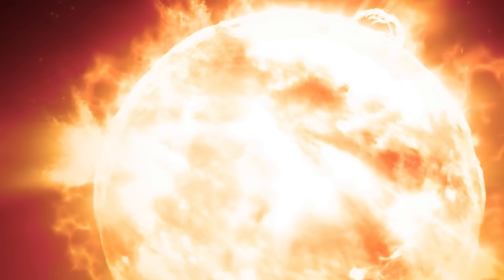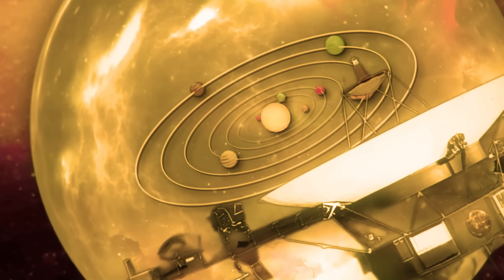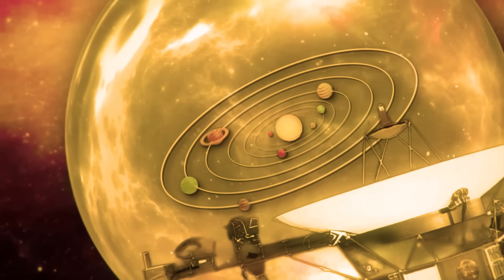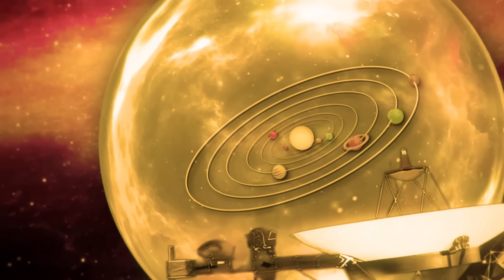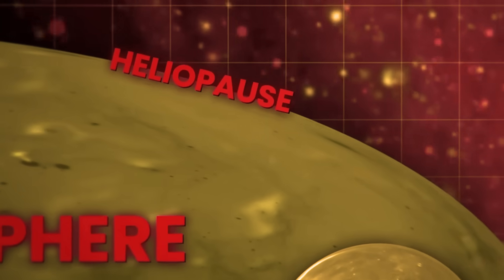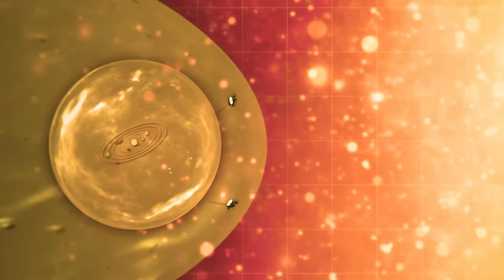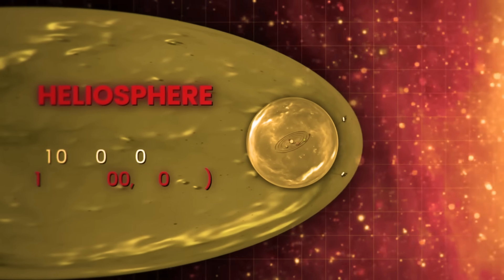Now, as Voyager 1 continues through this volatile sea, many wonder if these inconsistencies are more than just data points. They may be warnings, subtle signs that we are only beginning to understand the forces at play outside our sun's protective bubble. What if this wasn't a one-off error? What if the probe was reacting to something it couldn't describe, something that interfered with its perception of space itself? The truth is, we might never know. But one thing is certain: Voyager 1 is not alone out there. And it's not just the silence of space that's unnerving—it's the quiet, persistent signal from a machine that may have seen too much.